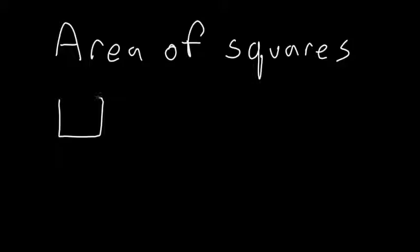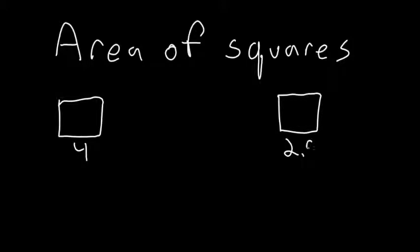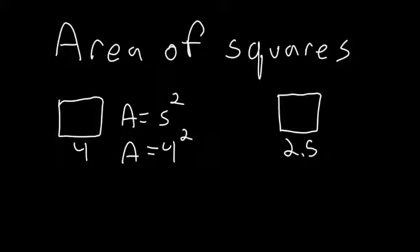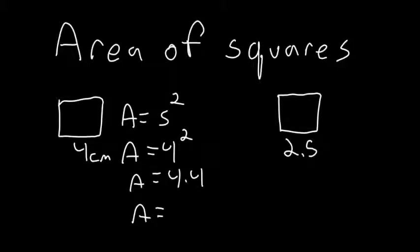Let's do a couple more examples of squares. If our side length is 4, and here our side length is 2 and 5 tenths, then area equals side squared, so area equals 4 squared, which is 4 times 4.